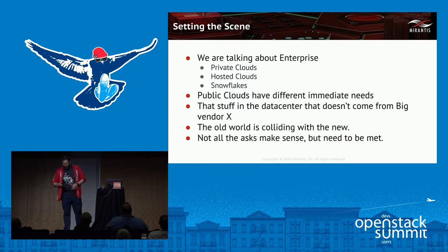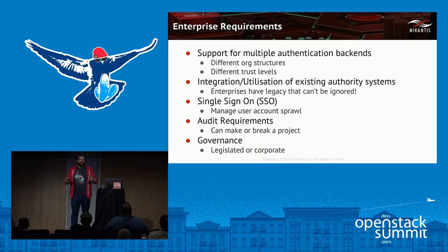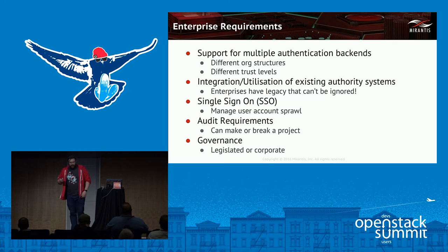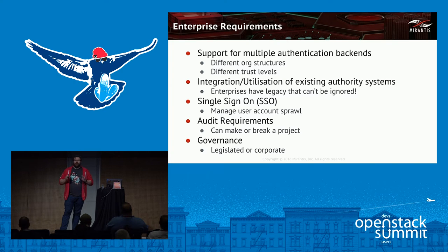What are the enterprise requirements we're dealing with these days? Enterprises want different backends. There are typically three or four different types of authentication backends, caused by different org structures and different trust levels. Go to any enterprise today and you're going to find everything from Microsoft Active Directory to Novell, IBM and the whole gamut. We need to integrate to existing systems. A lot of these systems are in place, their rules are in place, and the companies have spent many years setting them up.